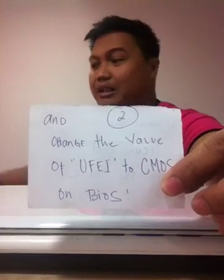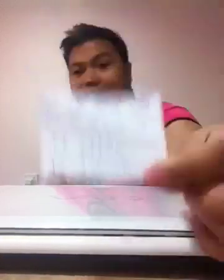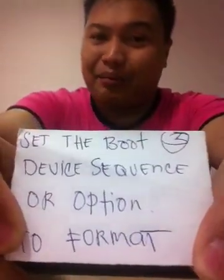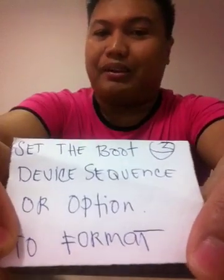So after doing that, you'll be ready to do the final step: set the boot device sequence or boot option. For example, if you are formatting from a DVD or CD, you have to select the first boot option as CD or DVD. Or if you are booting from a USB, set the first boot device to that USB.